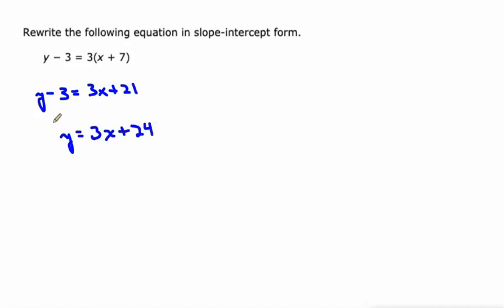Okay, so we haven't talked about it in any of the previous videos, but maybe you know that this is called point slope form. And we just took it and turned it into slope intercept form, where now we know that the slope is 3 and the y-intercept is 24. So it might make it easier for us to graph it.